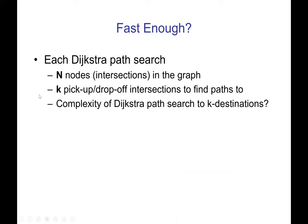So is that fast enough? Each one of these path searches is still Dijkstra's algorithm, but there are slightly different variations. Do I start at one spot or multiple spots? Am I going to one destination or searching until I hit multiple destinations? We've got N nodes in the graph and K destinations — K pickup or drop-off intersections that we want to find paths to. The most important path search is from one source, a single source to multiple destinations, and we have K destinations. What is the complexity of that?